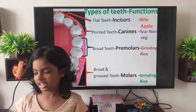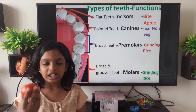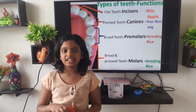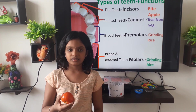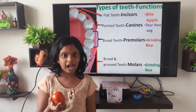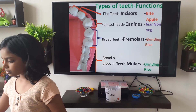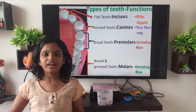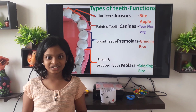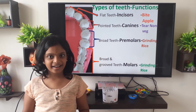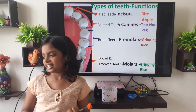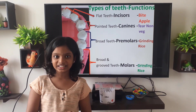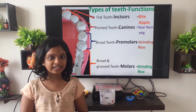Now let us see the functions of the teeth. If I give you an apple or a tomato, with which teeth do you bite it? With incisors — you will eat the tomato or apple with incisors. If I give you non-veg or chicken, with which teeth do you tear it? It is with canines. And if I give you a little amount of rice, with which teeth do you eat it? With premolars and molars.